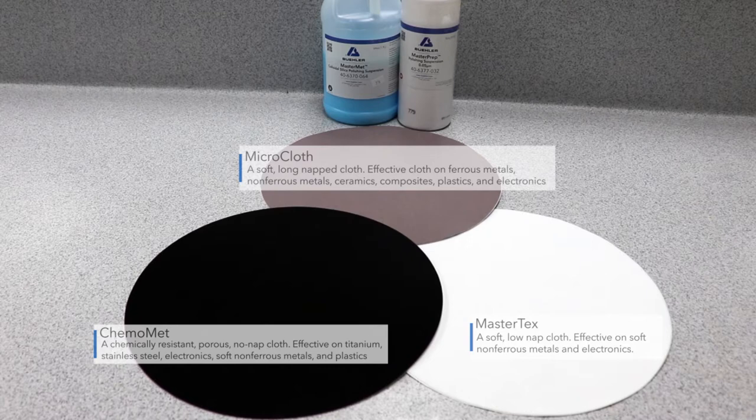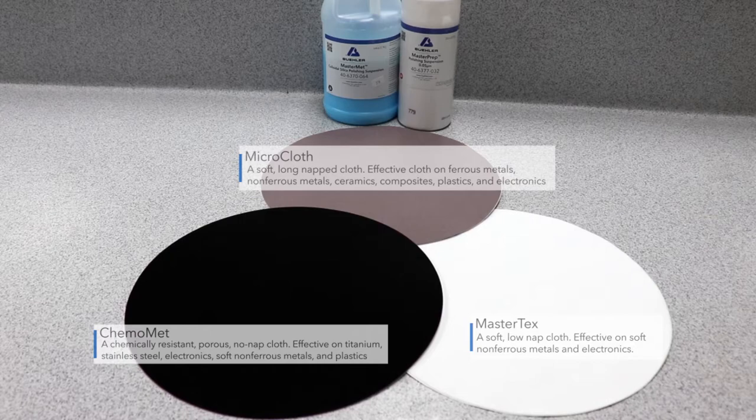Comomet is a chemically resistive, porous, no-napped cloth that is effective on stainless steels, electronics, titanium, and other refractory metals.